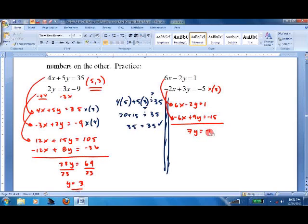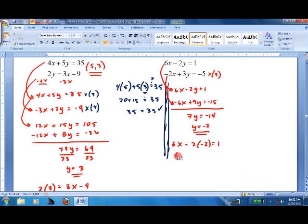I get 7y equals negative 14. I'm getting a little tired of doing all this math, so I'm going to start shortcutting. y equals negative 2. 6x minus 2 times negative 2 equals 1. 6x plus 4 equals 1. 6x equals negative 3. x equals negative 1 half. So negative 1 half comma negative 2.